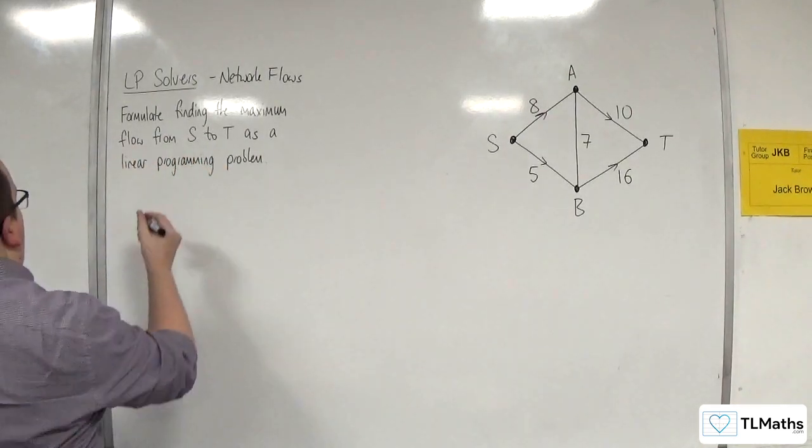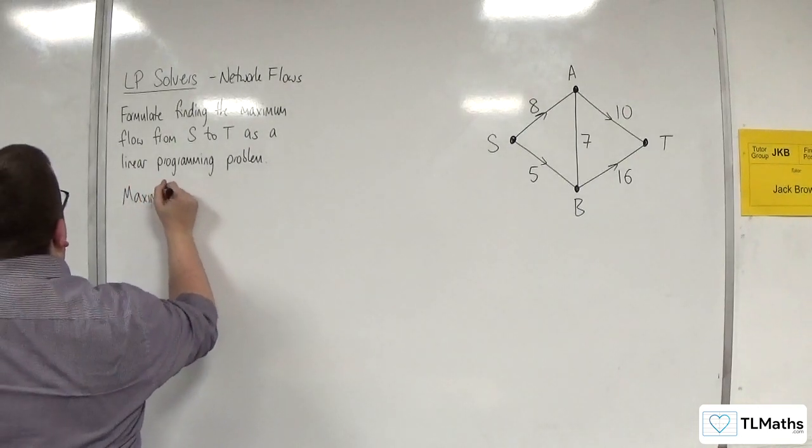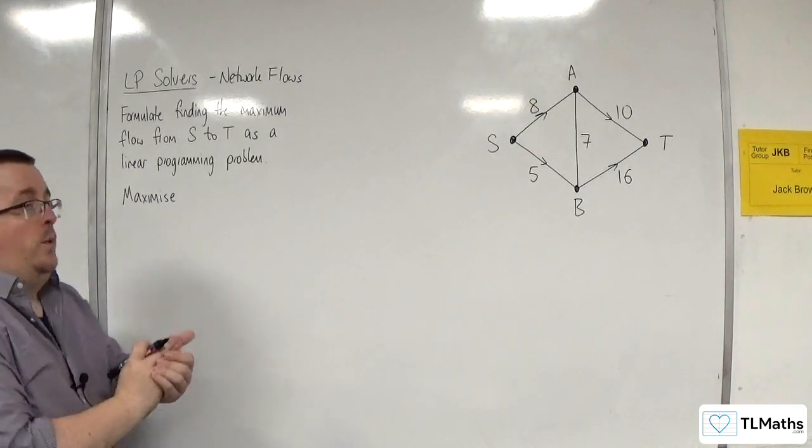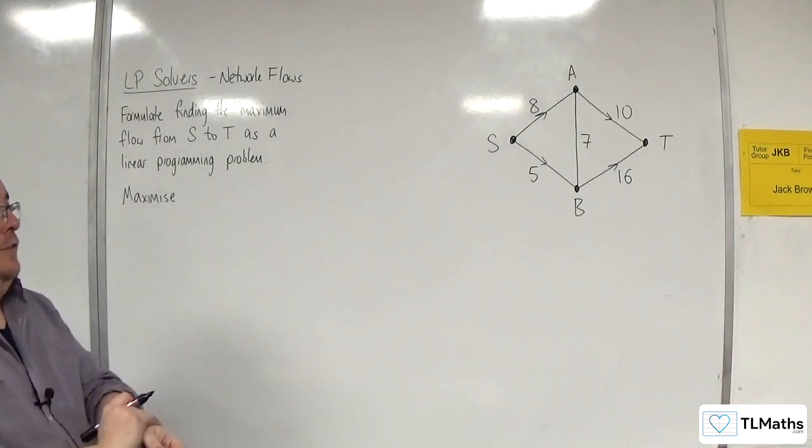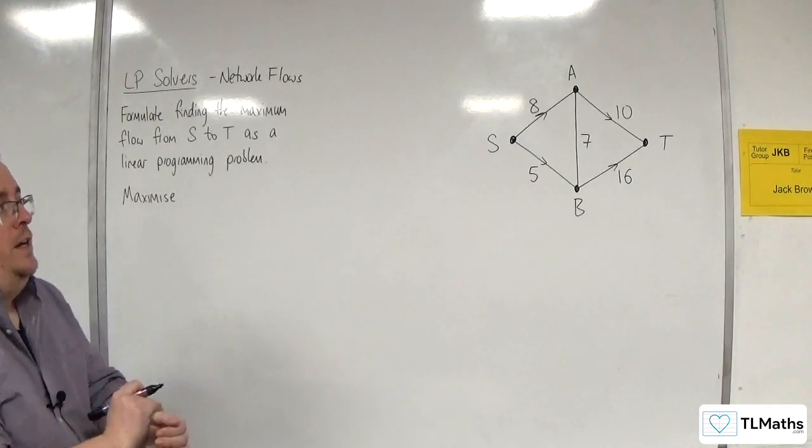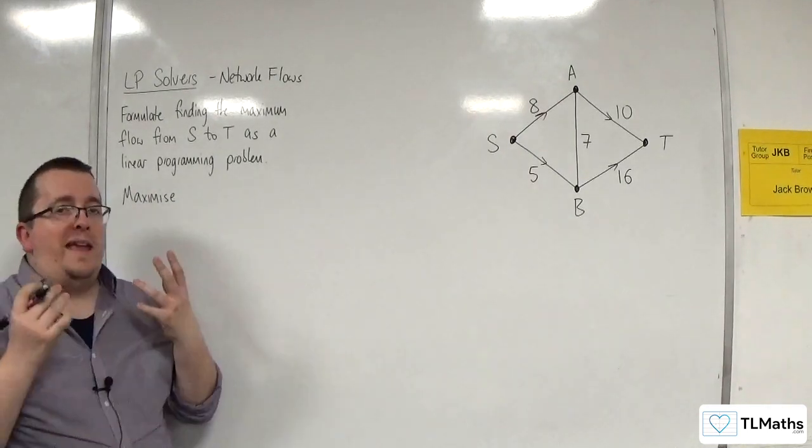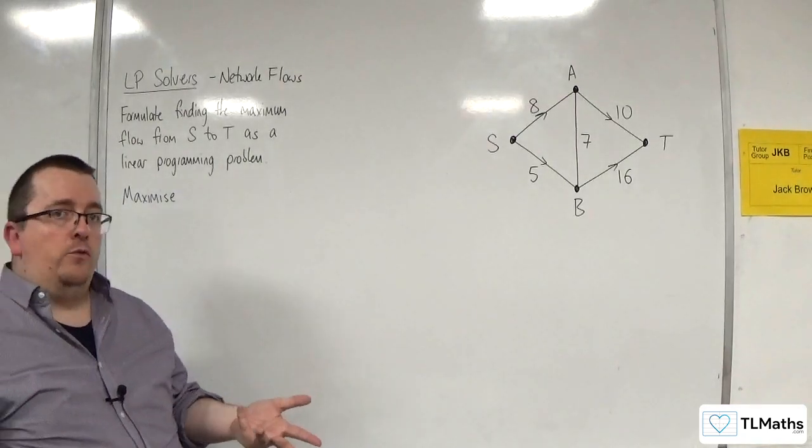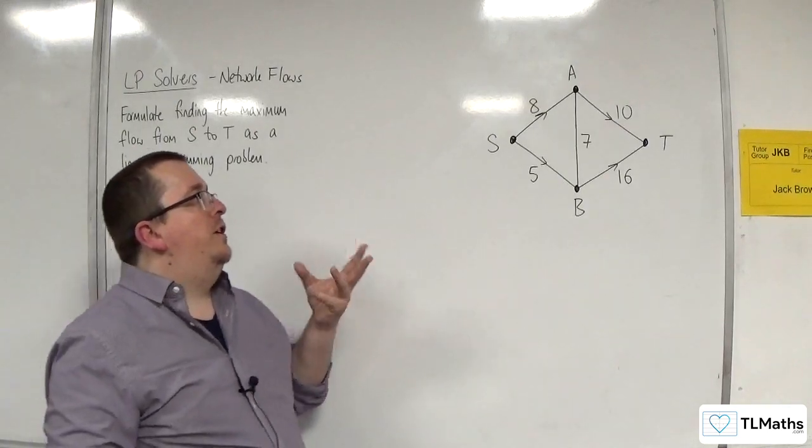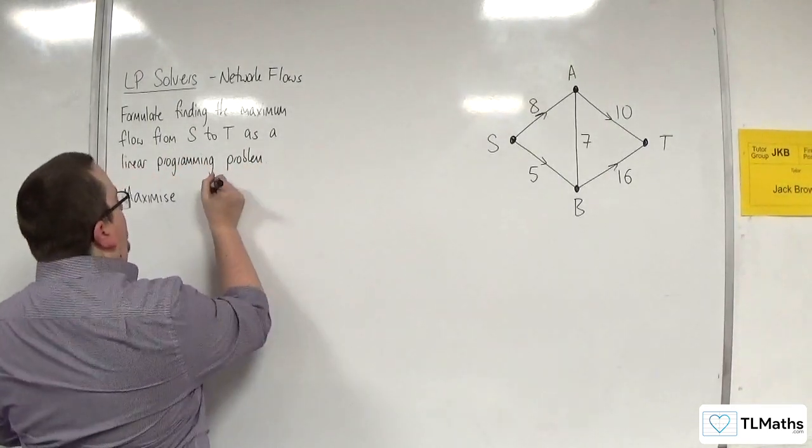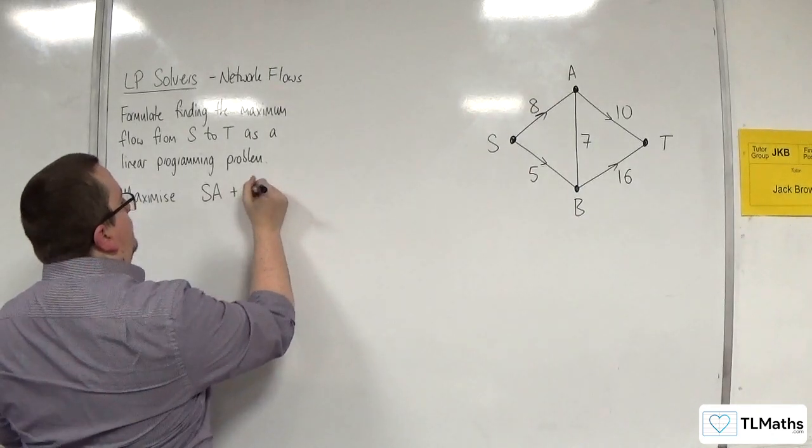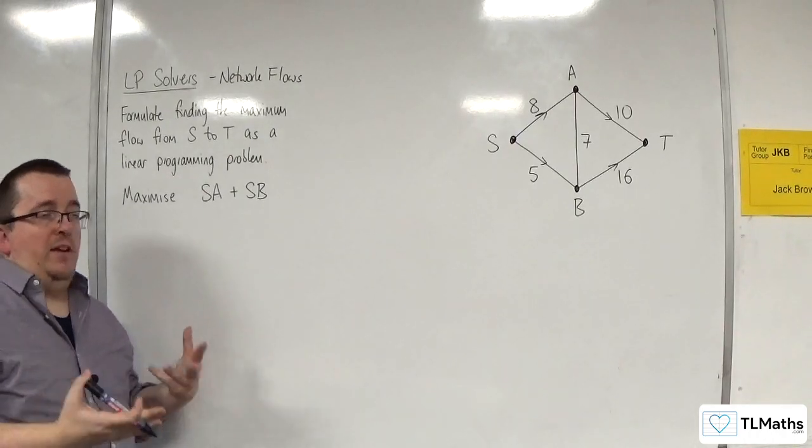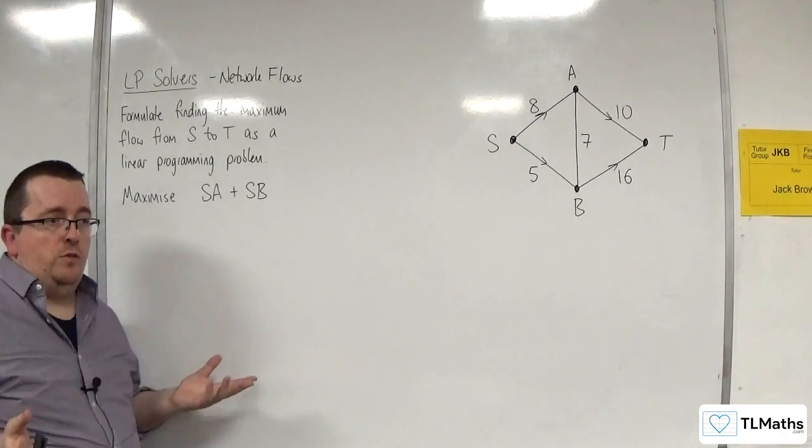So first of all, how do I deal with this if I'm not using indicator variables? Well, first of all, we want to maximize. And the way you can do this is one of two ways. You can either look at the flow going out of S or the flow going into T. So you can either maximize S, A plus S, B, or you can maximize A, T plus B, T. It doesn't matter which.